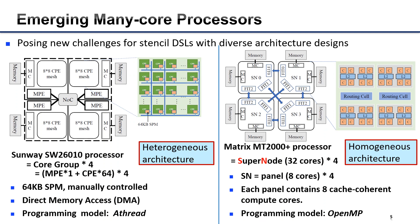The Sunway processor is a heterogeneous processor adopted by the Sunway Taihu Light supercomputer. It contains four core groups, where each contains one management processor (MP) and 64 CPEs for acceleration. Each CPE has 64 KB scratch pad memory, which should be manually controlled by programmers, and it also supports direct memory access.